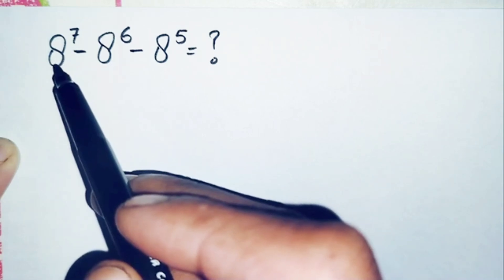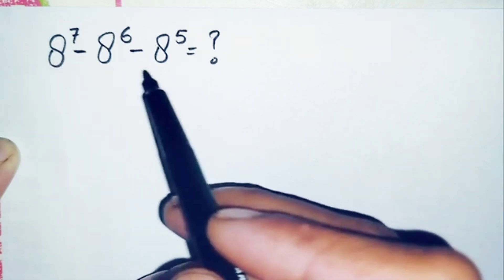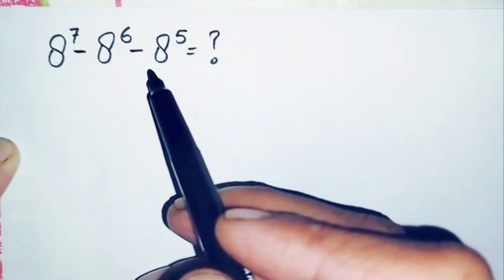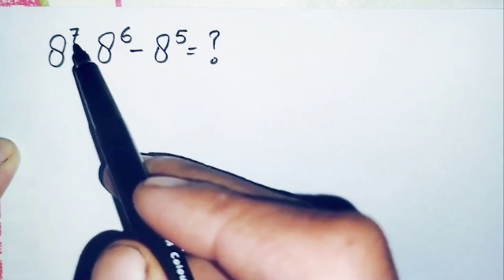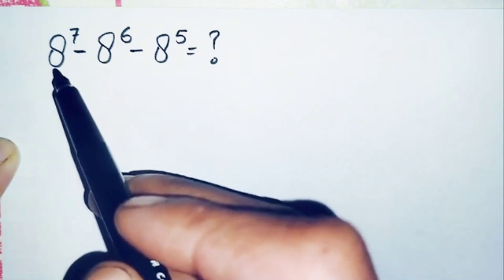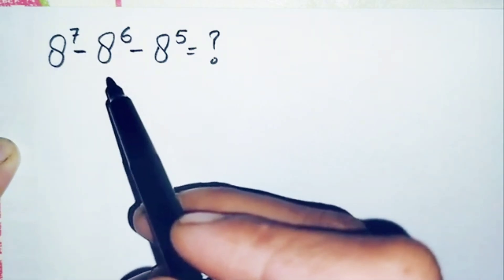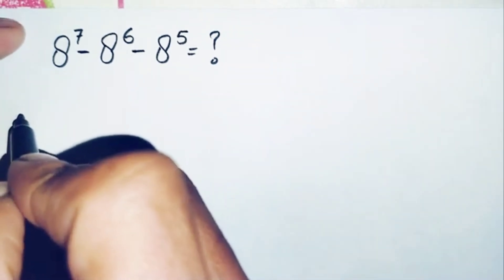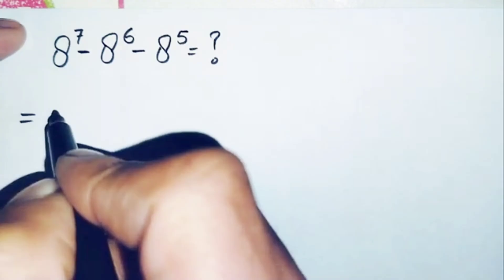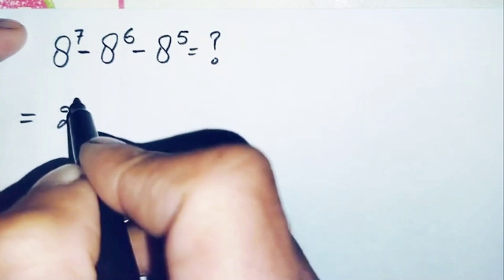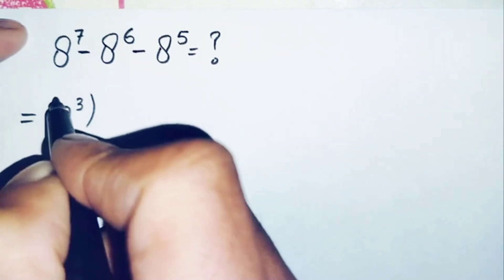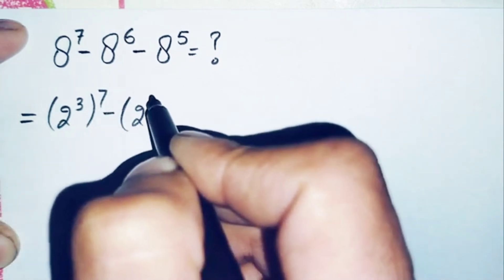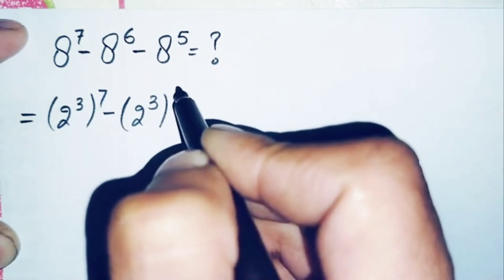So we will use another method: change all the bases to exponential form having 2 in the base, since multiplying 2 a number of times is very simple. We change all the bases to exponential form with base 2. Therefore we can write this as: 2 raised to power 3, all raised to power 7, minus 2 raised to power 3, all raised to power 6, minus 2 raised to power 3, all raised to power 5.